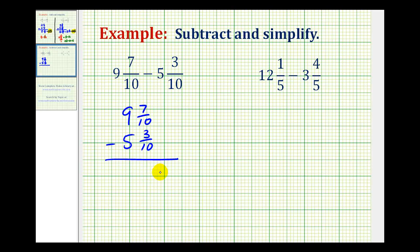So the denominator is going to stay the same and the numerator will be 7 minus 3, which is equal to 4. And now we'll subtract the whole numbers, 9 minus 5 is equal to 4.